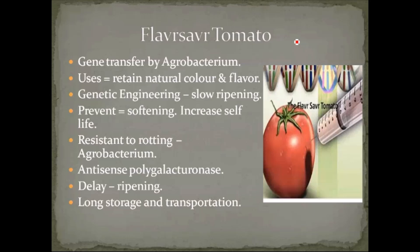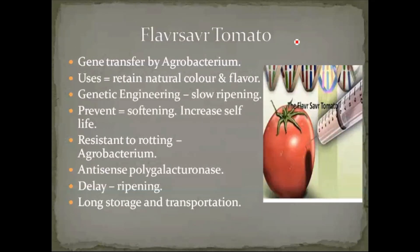Then we follow the genetic engineering step, which is used for the slow ripening of tomatoes. After collecting the fruits from the plant and keeping them in an open vessel, in the very next morning we can see fully ripened tomato fruits. This shows a very fast ripening process. So to slow down the ripening process and to increase the flavor and maintain the solid state of the fruit, they are developing Flavor Saver Tomatoes.